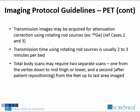Continuing with imaging protocol guidelines for the PET portion of the scan, transmission time using rotating rod sources is usually 2 to 3 minutes per bed. Total body scans may require two separate scans — one from the skull vertex down to mid-thigh or lower, and a second scan after patient repositioning from the feet up to the last area imaged. Currently, manufacturers have designed scanning systems that are now able to scan 2 meters or more in length, eliminating the need to reposition patients requiring a total body scan.